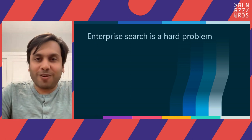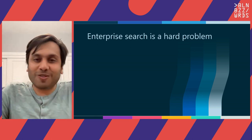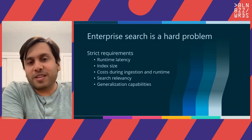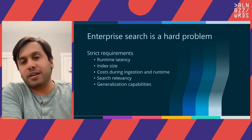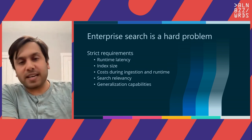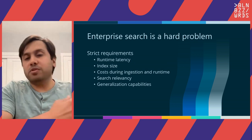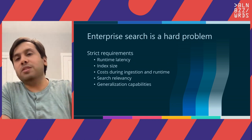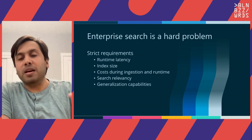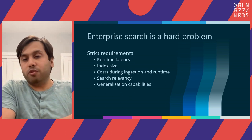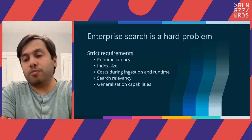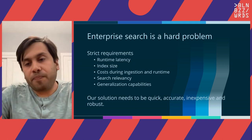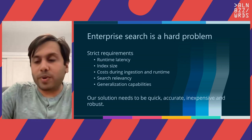Enterprise search is a hard problem, something that needs no selling to this audience. The reason why it's hard is because it has very strict requirements: strict requirements of runtime latency, index sizing, costs, search relevancy, and of course generalization capabilities. By generalization capabilities, I mean the solution needs to do well not only on the domain for which it was built, but on all kinds of different data domains. In other words, the solution needs to be quick, accurate, inexpensive, and robust.